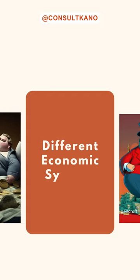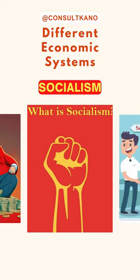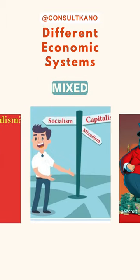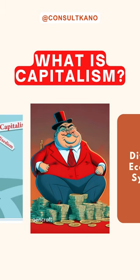There are three primary economic systems: capitalism, socialism, and mixed economies. In this short video, we will define a capitalist economic system.